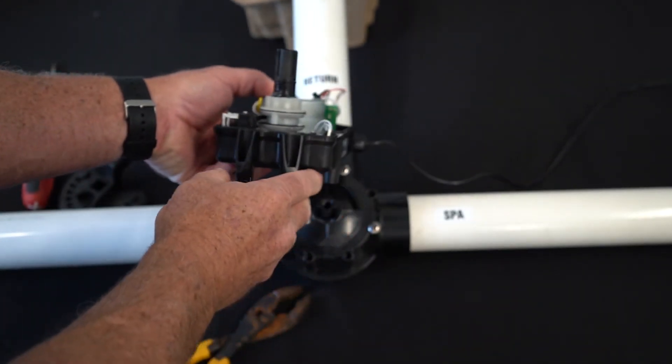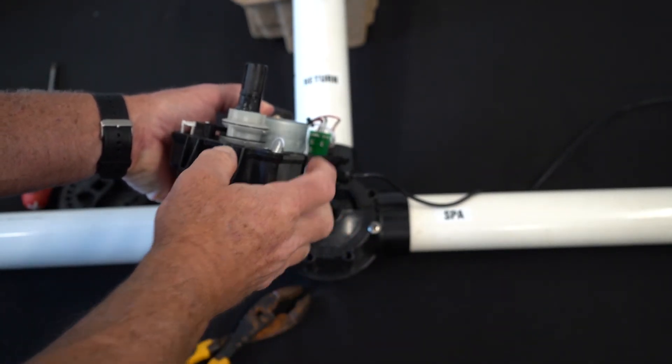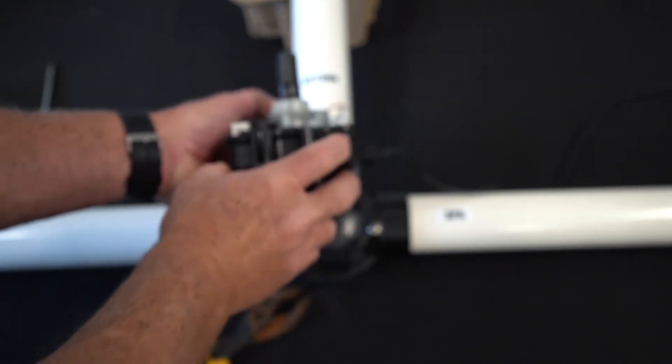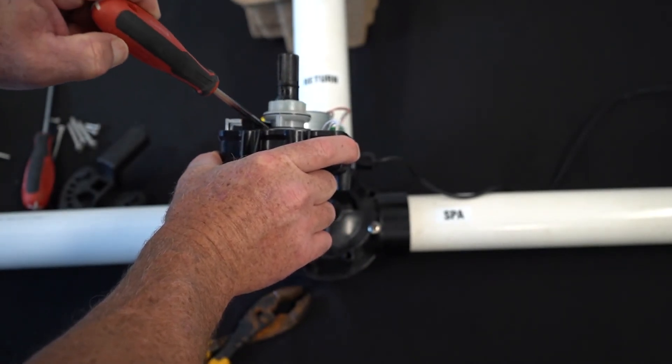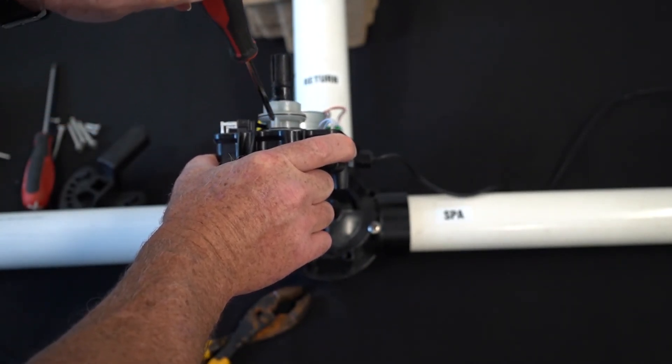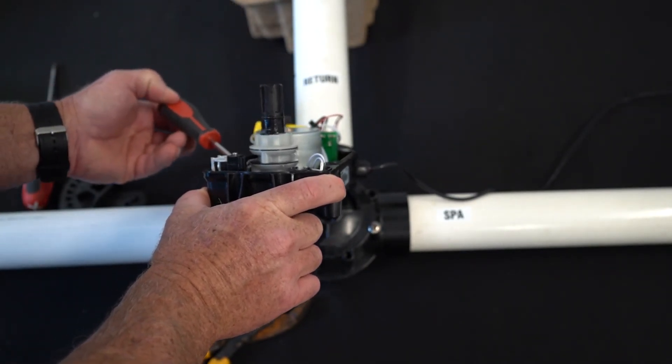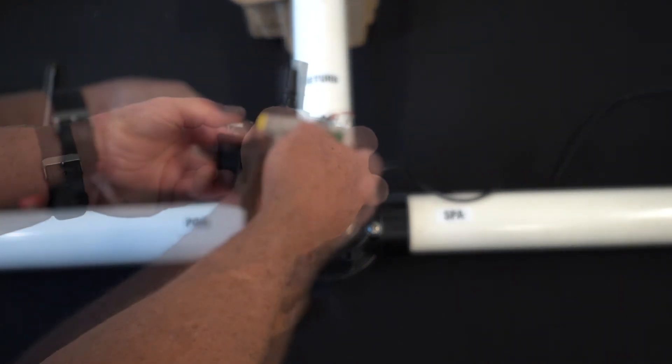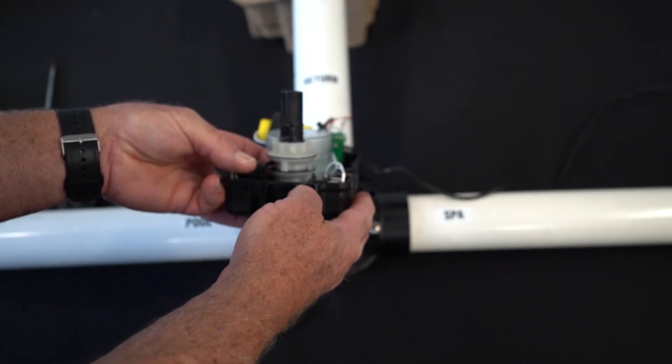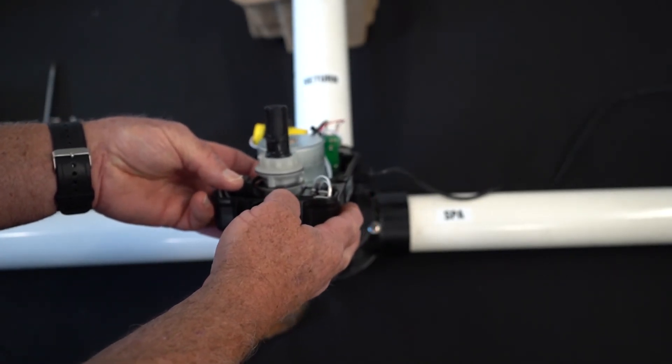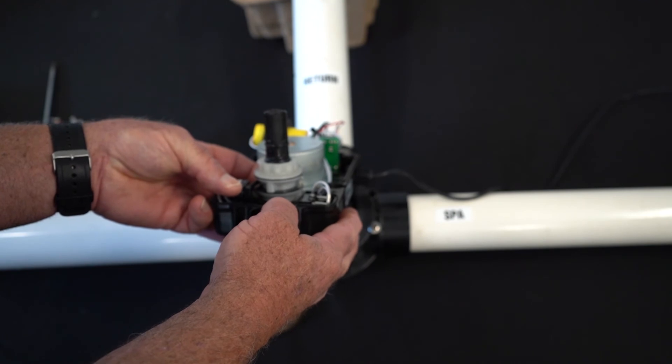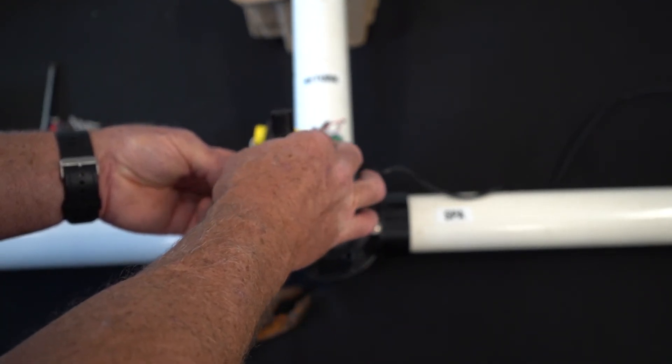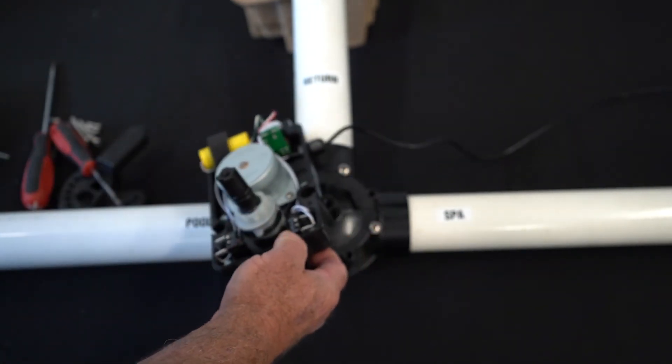And you don't want to over loosen it. And then you are going to take this lower cam and you are going to rotate it without rotating the upper one. You want to get it so that it just closes that micro switch over there. Once you get that, you want to tighten it up.